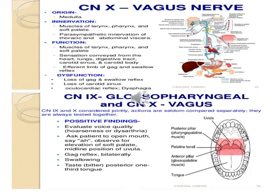The vagus nerve provides parasympathetic supply. Practically, the glossopharyngeal and vagus nerves are examined together, since fibers of the glossopharyngeal nerve are carried on the vagus nerve. We evaluate the voice quality — whether the patient has hoarseness of voice or dysarthria. We ask the patient to open his mouth and look at the uvula position, then examine the palatal and gag reflex, and taste sensation from the posterior one-third of the tongue.